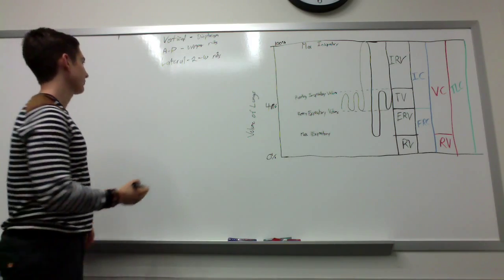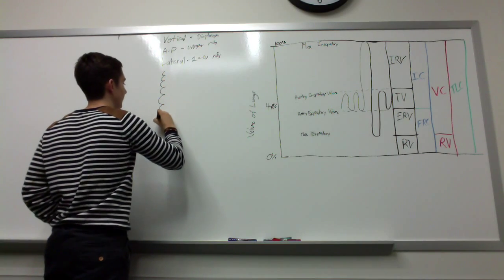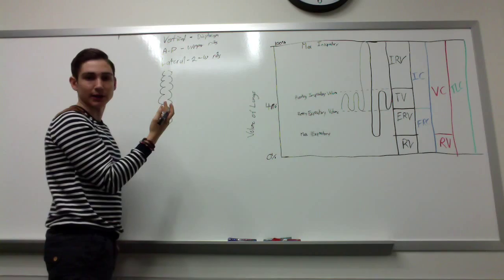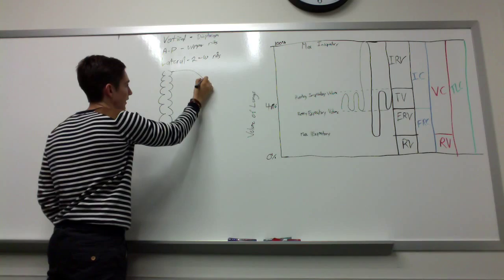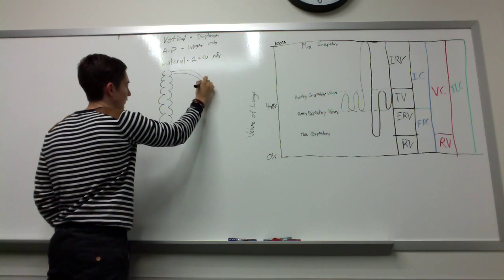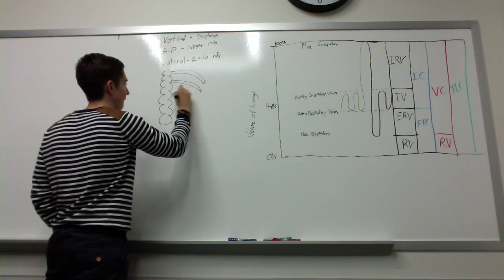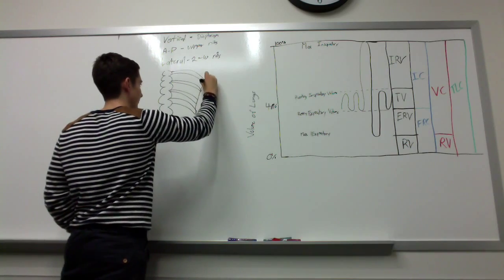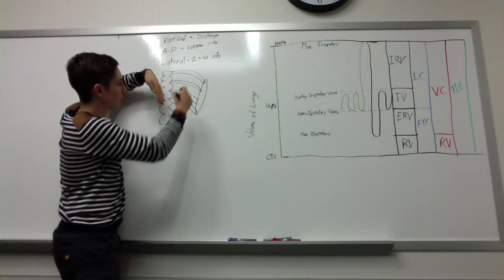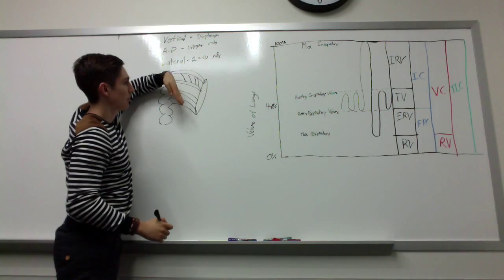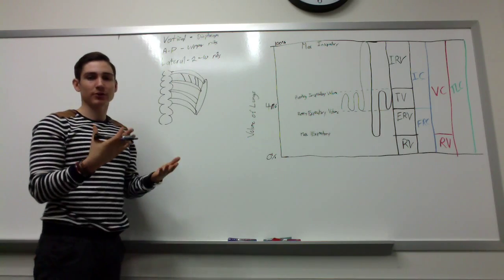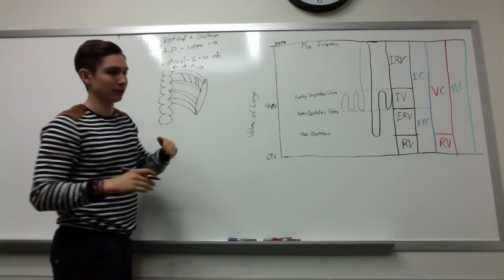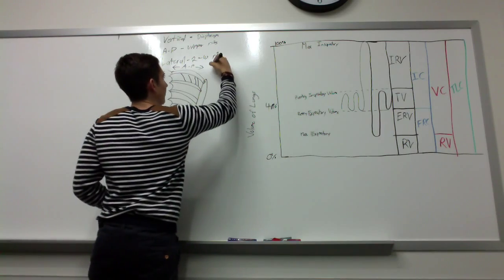For the anterior-posterior movement, if you draw out the spine, the ribs attach to the vertebrae in the back and are angled downwards. When the external intercostals contract, they pull the sternum up, and that causes the increase in anterior-posterior position, so that dimension increases in size. Because it's essentially acting as a lever, this effect is called the pump handle.